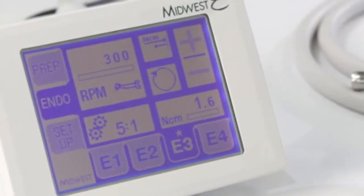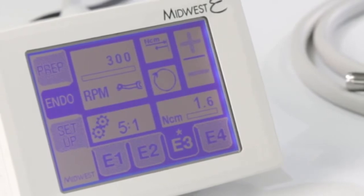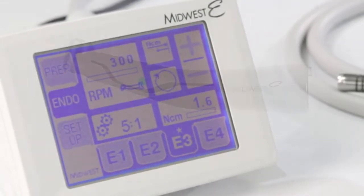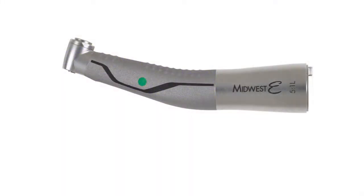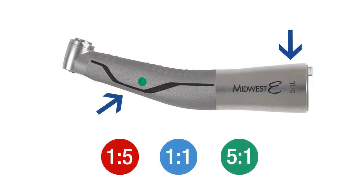While in the appropriate operating mode and preset tab, ensure that the gear ratio setting matches that of the attachment connected to the Midwest E motor. The gear ratio is indicated on the attachment. The colored dot on the Midwest E attachments also indicates the gear ratio.